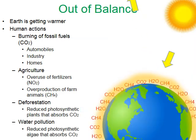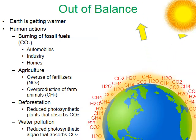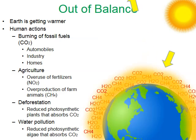Coming back to the animation — here again is our natural greenhouse effect warming planet Earth. But since the industrial revolution we've been releasing far more greenhouse gases into the atmosphere from the burning of fossil fuels, overuse of fertilizers, and overproduction of farm animals. As a result, we have a thicker atmosphere trapping even more heat near the planet's surface. This is the man-made greenhouse effect — this is climate change.